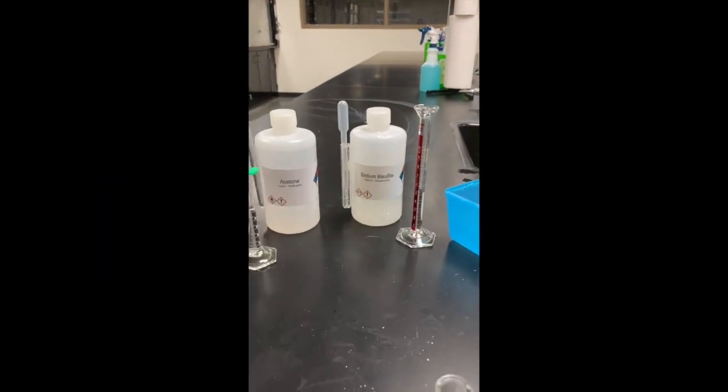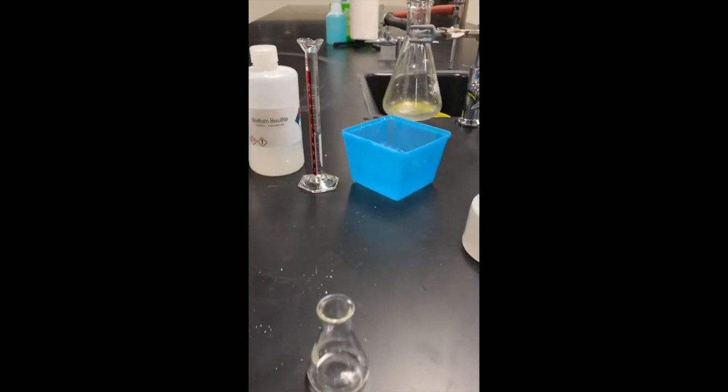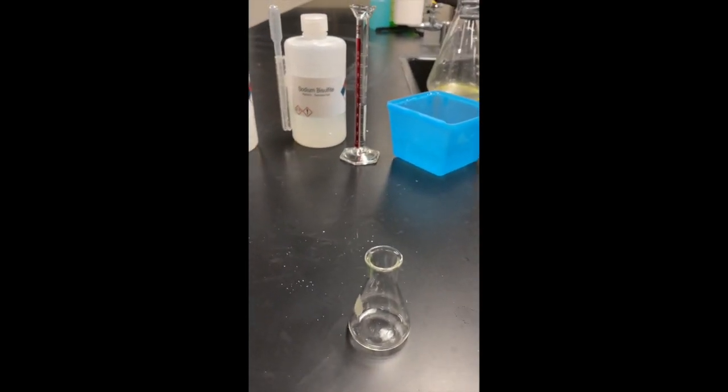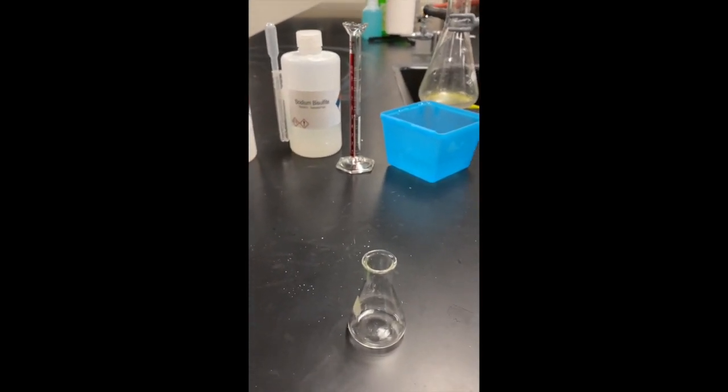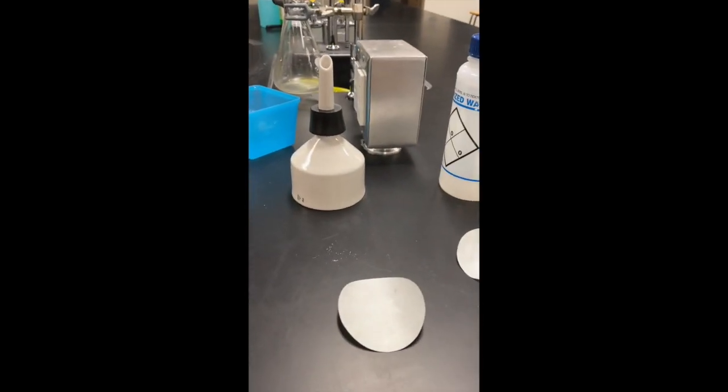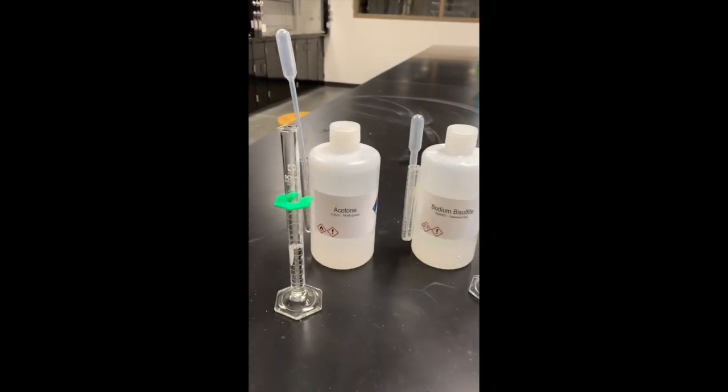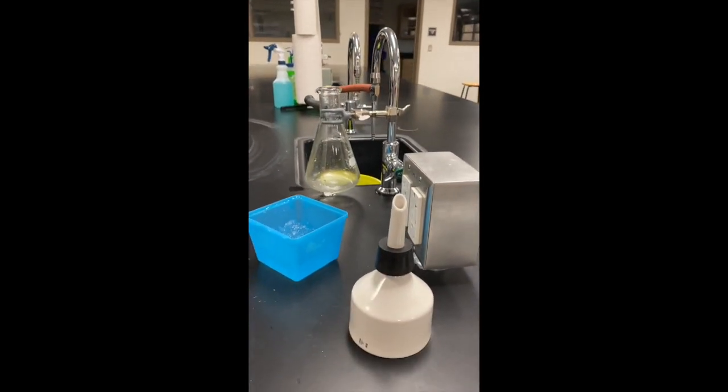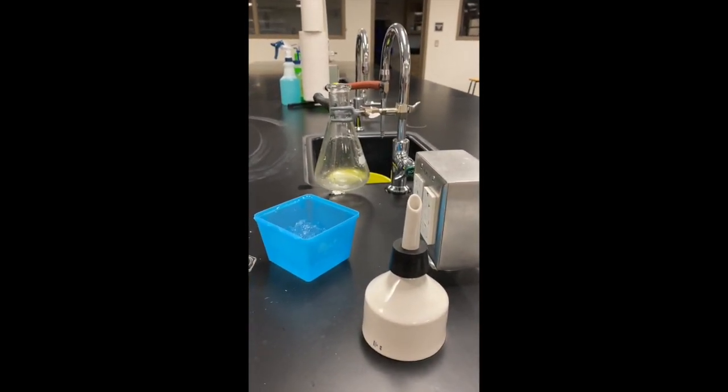For the addition reaction, we're going to put five mils of sodium bisulfite inside of this flask. We're going to let it cool for five minutes. While we're waiting for it to cool, I'm going to go ahead and weigh the filter paper. And after it's all done, we're going to be adding five mils of acetone to it. We're going to get a precipitate and we're going to filter it in the same way we did on our previous experiment.